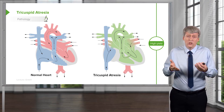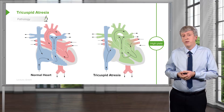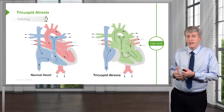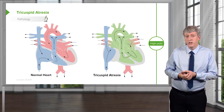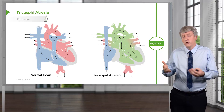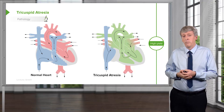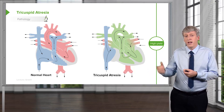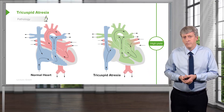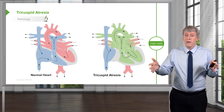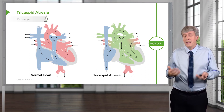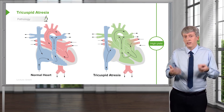Then, around a year of life, they'll have a hemi-Fontan, which is another surgical procedure where some of the blood will drain into the pulmonary artery directly, usually from the SVC. And then, maybe a few years of life, they'll complete the operation and have the inferior vena cava also going into the pulmonary artery. It's a gradual staged repair that ends up with an infant with a single ventricle powering the blood to their body and passive blood flow filling the lungs.